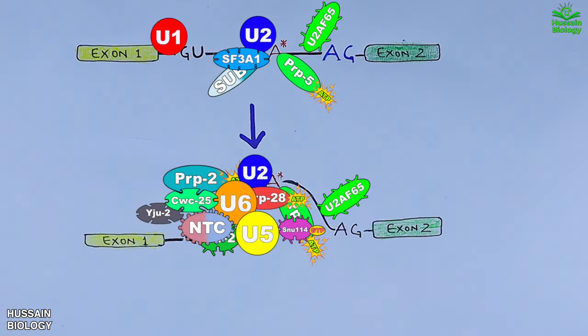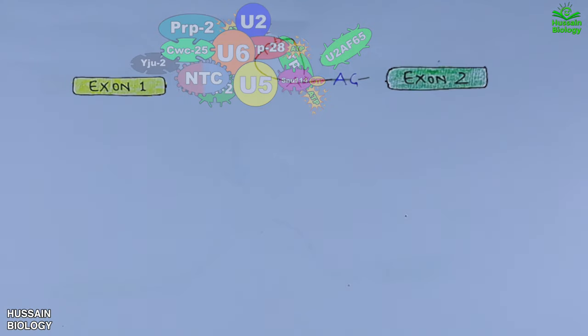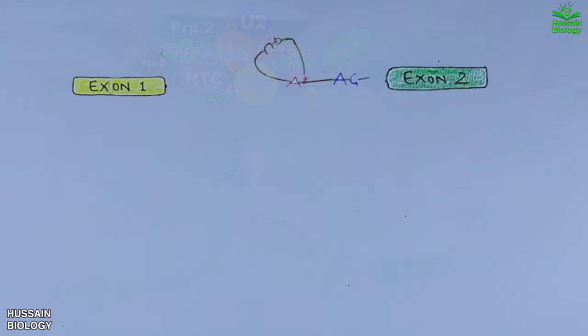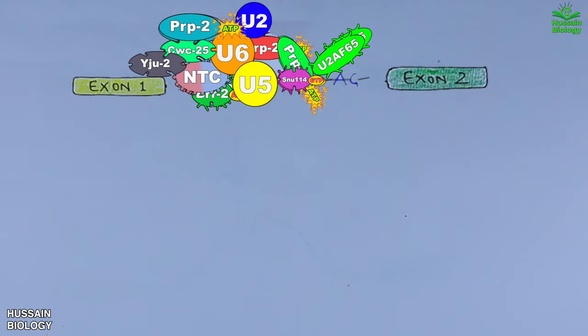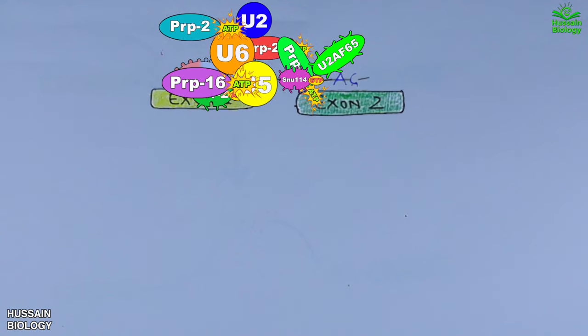Now getting back to the diagrammatic representation. After catalysis, the lariat structure remains with the spliceosome as shown in the diagram. In order to mediate these processes, PRP16 comes in and binds with these structures, which releases CWC25 and YJU2 proteins. In the same step, the ligation takes place, meaning two exons are joined together.